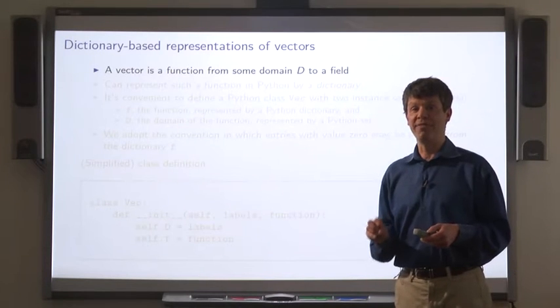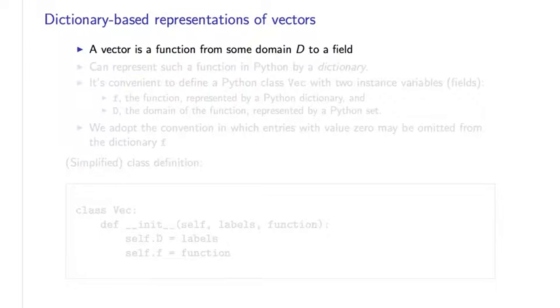We'll turn to other ways of representing vectors in Python. I've told you that a vector is just a function from some domain D to a field. And we know how to represent functions in Python using dictionaries.